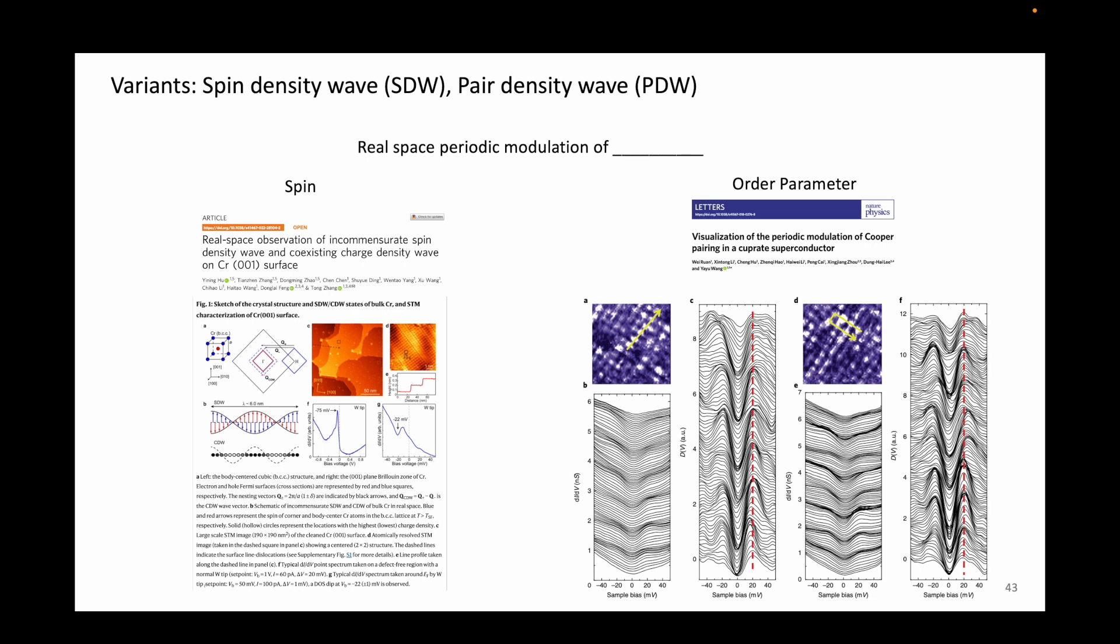In systems with spin density waves, the standing wave of electron cloud is spin-polarized. Spin density waves are typically seen in magnetic systems, as can be expected.